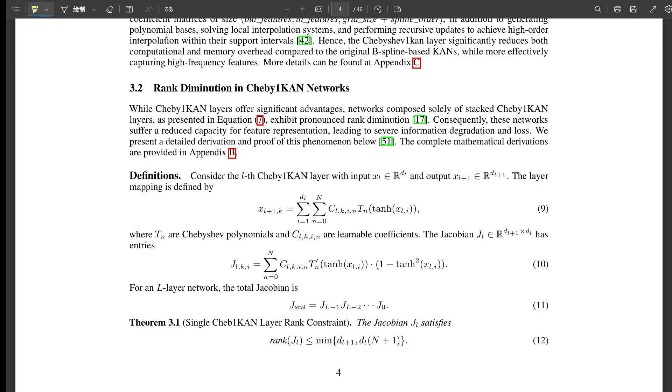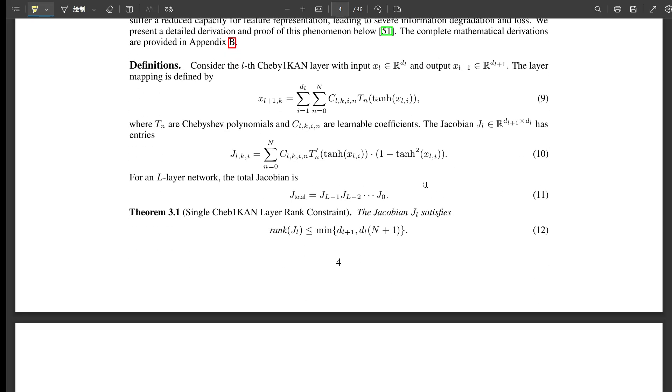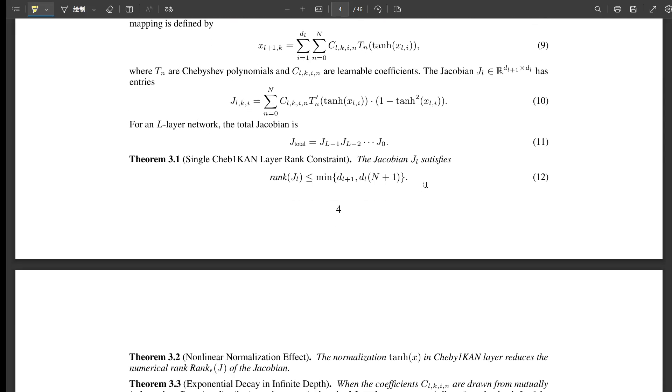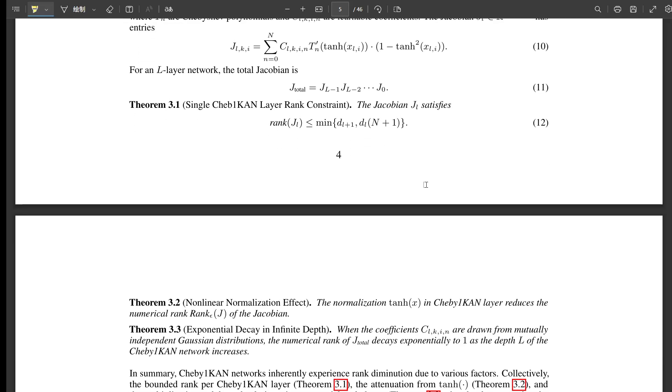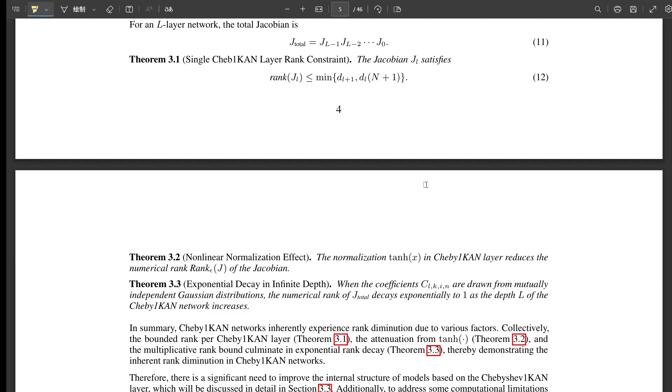As information flows through, the network's ability to make sharp distinctions or big changes in response to input gets kind of muted, layer by layer. The third one is maybe the most damaging. It's how these effects combine in a deep network. Theorem 3.3 shows that for a multi-layer Chebyshev-1-CAN, the rank of the whole network's Jacobian tends to decay, actually exponentially, towards just one as the network gets deeper. Exponential decay down to rank one - that sounds really bad. It means a deep network could end up only representing changes along a single direction. It severely limits its ability to learn complex, multi-dimensional functions.